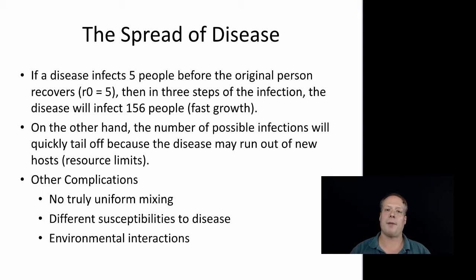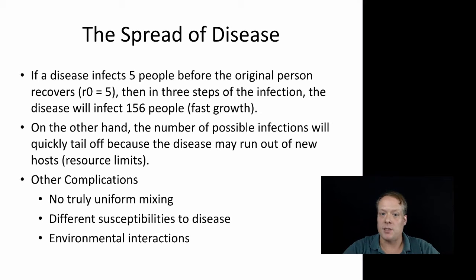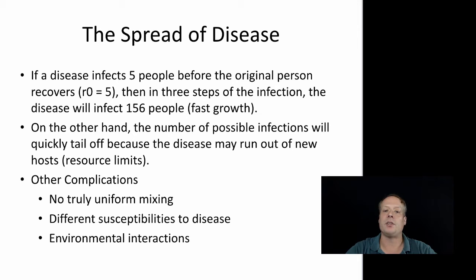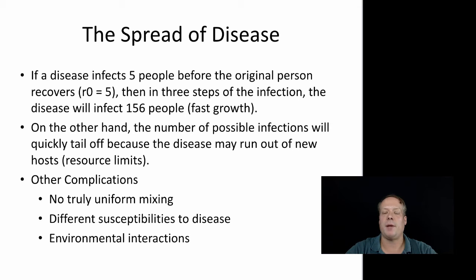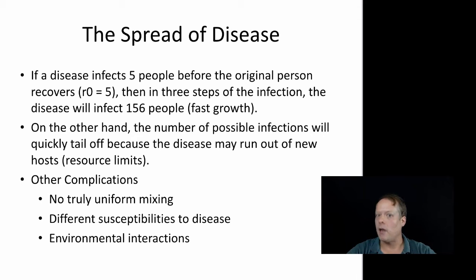But there are other complications that that model doesn't take into account. For instance, that model assumes uniform mixing within the population — in other words, every person has an equally likely probability of interacting with everybody else. We know that's not the case: some people are much more likely to interact with certain individuals than others. There is also a difference of susceptibilities to disease — some people might be more susceptible than others. Finally, there's the possibility for environmental interactions; certain diseases are airborne, spreading within a contained area, so it might not just be people they directly meet. Because of all those things, there are ways we could improve upon this standard model, and an agent-based model is a good way to look at disease spread.